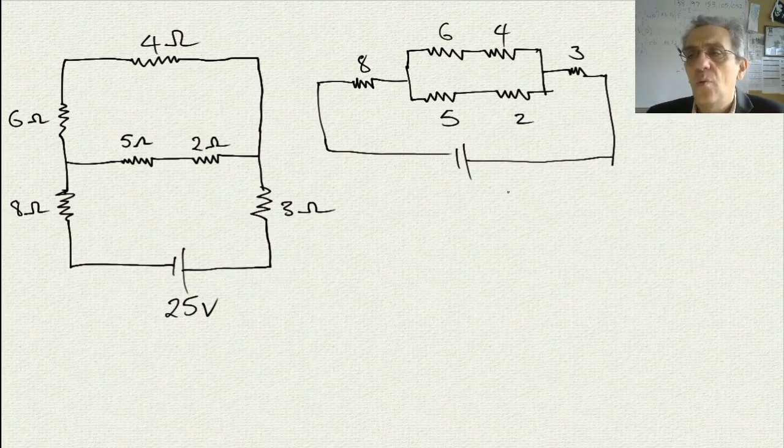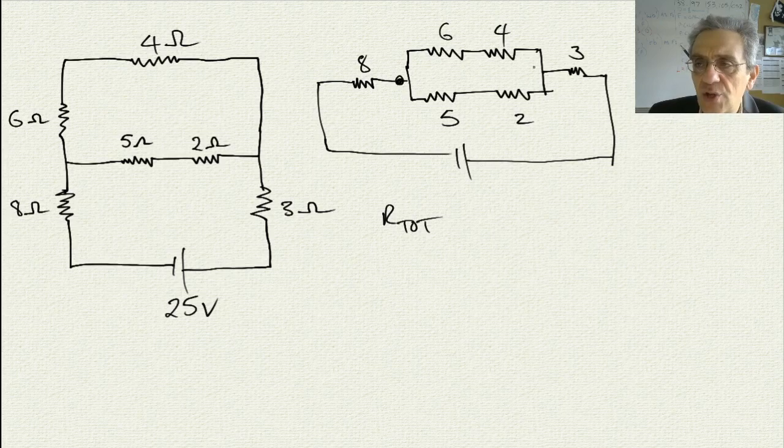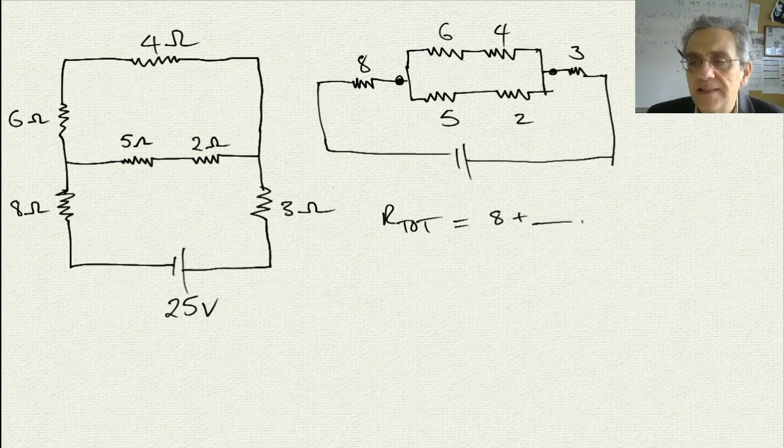What we want to do here is we want to calculate our total resistance first. Remember, our objective here is to find the voltage and the current through every resistor. So we know that if we cut this section out here, our total resistance is going to be equal to 8 plus some amount, which is the center portion, plus another 3, which is in series.